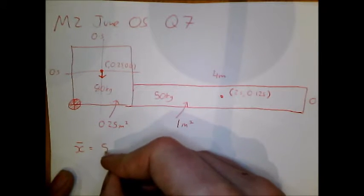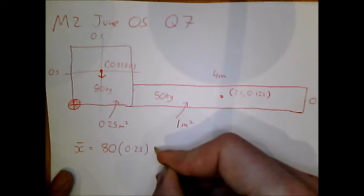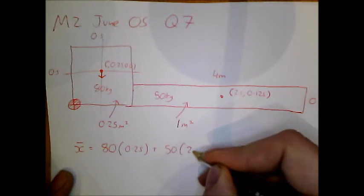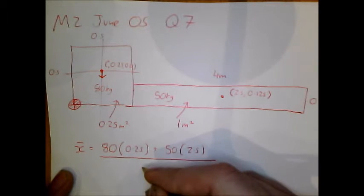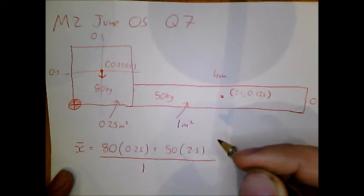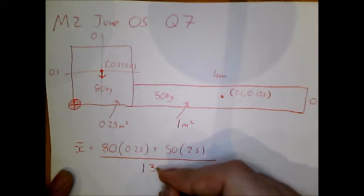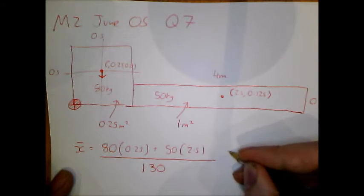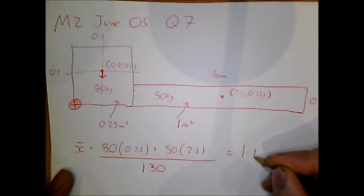Oh no, I don't even need the areas because I've got my weights. So x bar is equal to 80 lots of 0.25 plus 50 lots of 2.25, all over 130. After doing this, I should get an x value of 1.115.